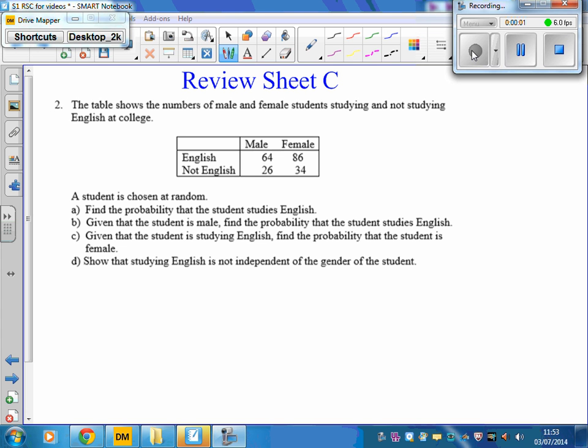Review sheet C, question 2. The table shows the number of male and female students studying and not studying English at college. If a student is chosen at random, part A, find the probability that the student studies English.